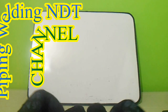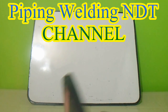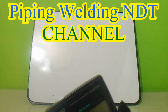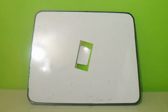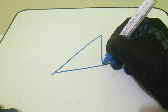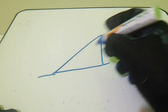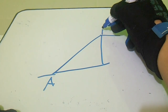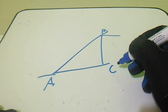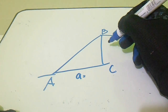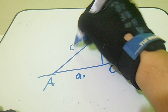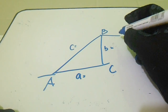Hello guys, welcome to the piping welding and beauty channel. I will show you how to compute a triangle where only one side is given. Check this out guys — I will draw a triangle with points A, B, and C.